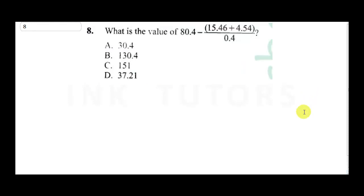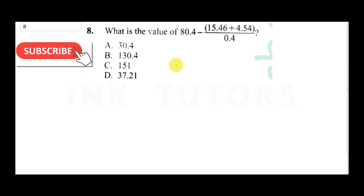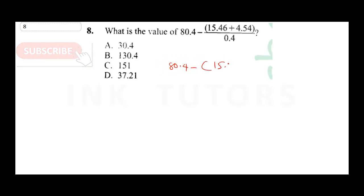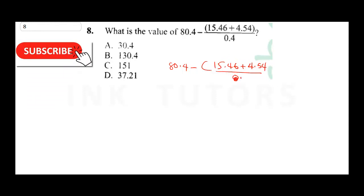This question asks: what is the value of 80.4 minus 15.46 plus 4.54 divided by 0.4? Remember your order of operations. We're going to perform 80.4 minus (15.46 plus 4.54) all over 0.4.